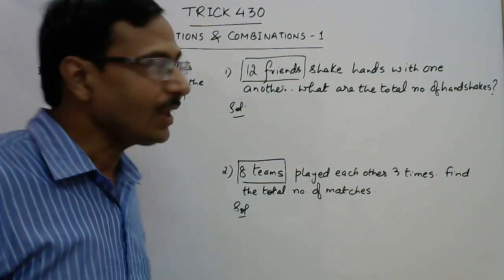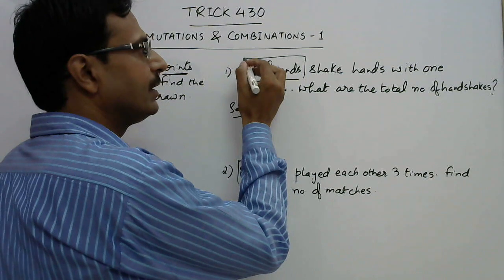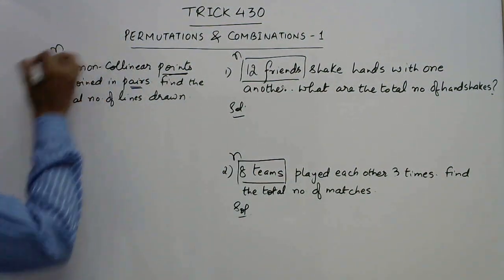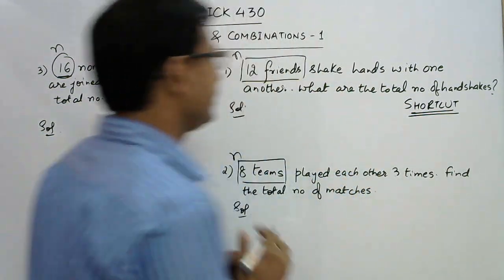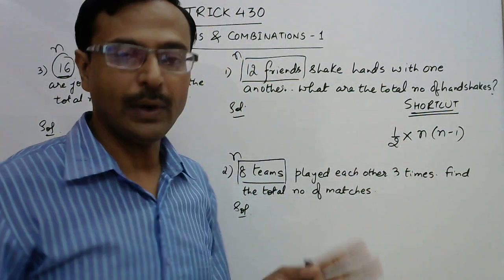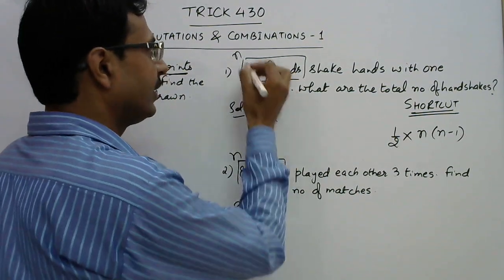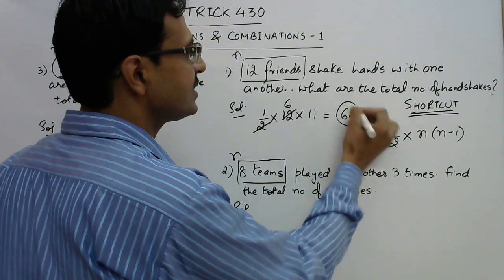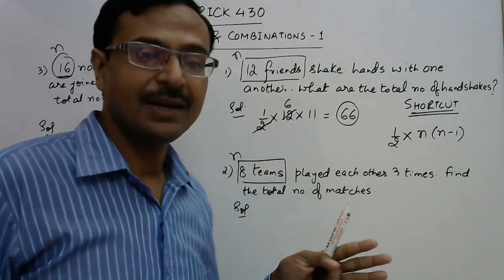The shortcut goes like this: take half of n and multiply by its predecessor, n minus 1. For 12 friends shaking hands with each other, n equals 12. Half of 12 is 6, and the predecessor of 12 is 11. So 2 cancels out 6 times, and the answer becomes 66. There are 66 handshakes in all when 12 friends shake hands with each other.